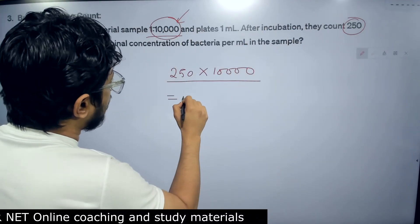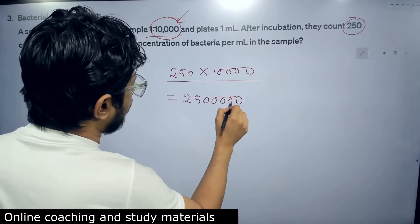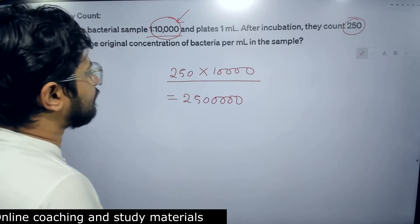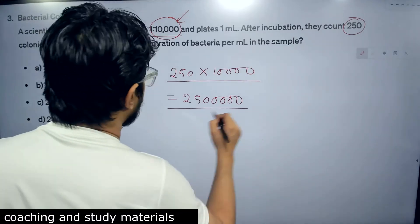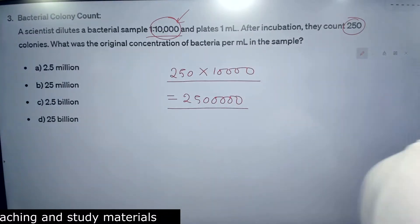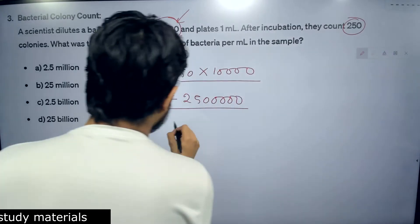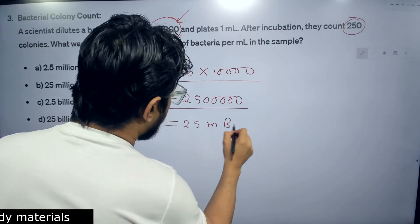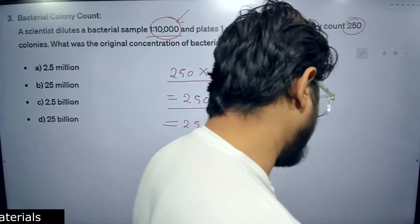So 250 into 10,000. That's 2, 5, 0, 0, 0, 0, 0. There will be 5 zeros after 25. And that is what we get as the number of bacteria in colonies. This is what we got. If we convert, that many bacteria, 25 then 5 zeros afterwards. That many bacteria per milliliter. And that is nothing but 2.5 million bacteria.